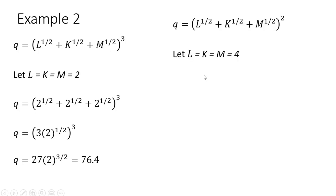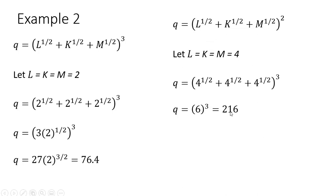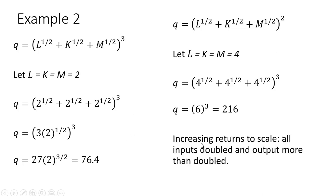Once again, we'll double all the inputs and plug 4 into the production function for each input. Simplifying, we get a value of 216 — that's more than a doubling of output. We doubled our inputs and output more than doubled, so here we have increasing returns to scale.